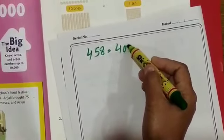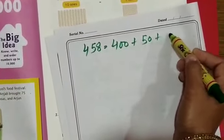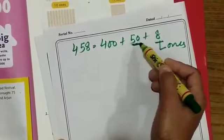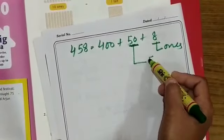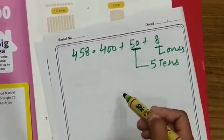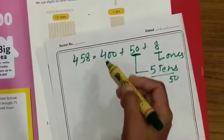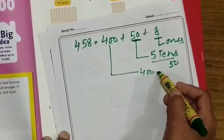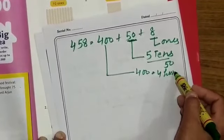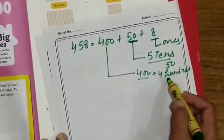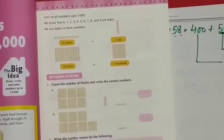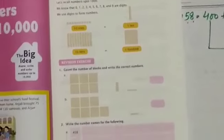Expanding 458: 8 is on the ones place; 5 tens means 50; and 4 hundreds means 400. So 400 plus 50 plus 8 equals 458. Students, we have now done the revision of what you already learned in class 2nd.